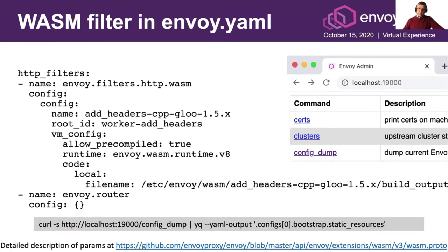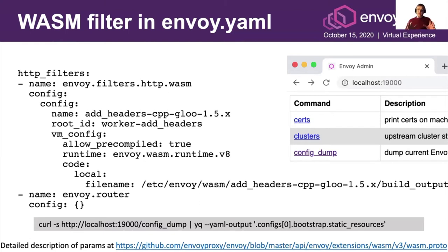Then select config dump to see your Envoy's active configuration. The configuration snippet on this slide is what is added for a WASM filter. This YAML blob may seem complicated to those new to Envoy, but essentially to configure a filter, you need to provide a runtime — here it's runtime V8 — and the location of your WASM bytecode, here a local file.